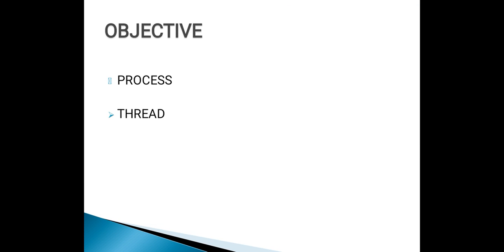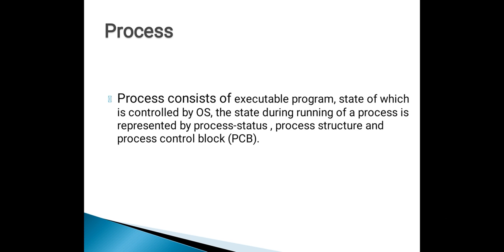Now let us see what exactly a process is. An application can be said to consist of a number of processes and each process runs under the control of an operating system. Examples: scheduler, task, or an interrupt service routine, shortly called as ISR. In short, a process consists of an executable program, the state of which is controlled by the operating system.